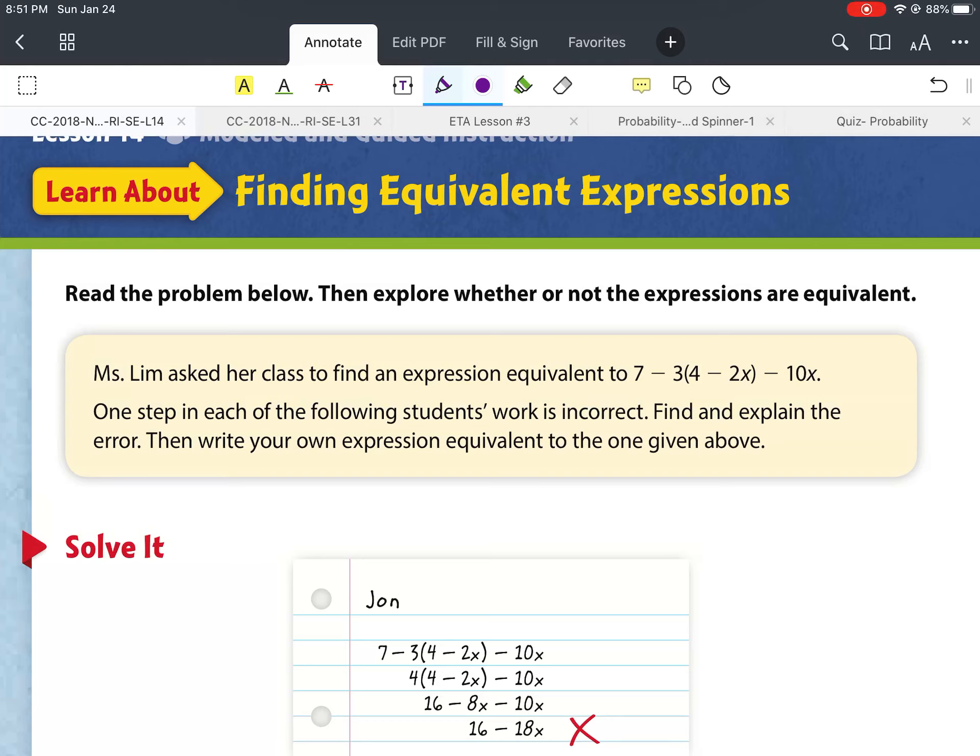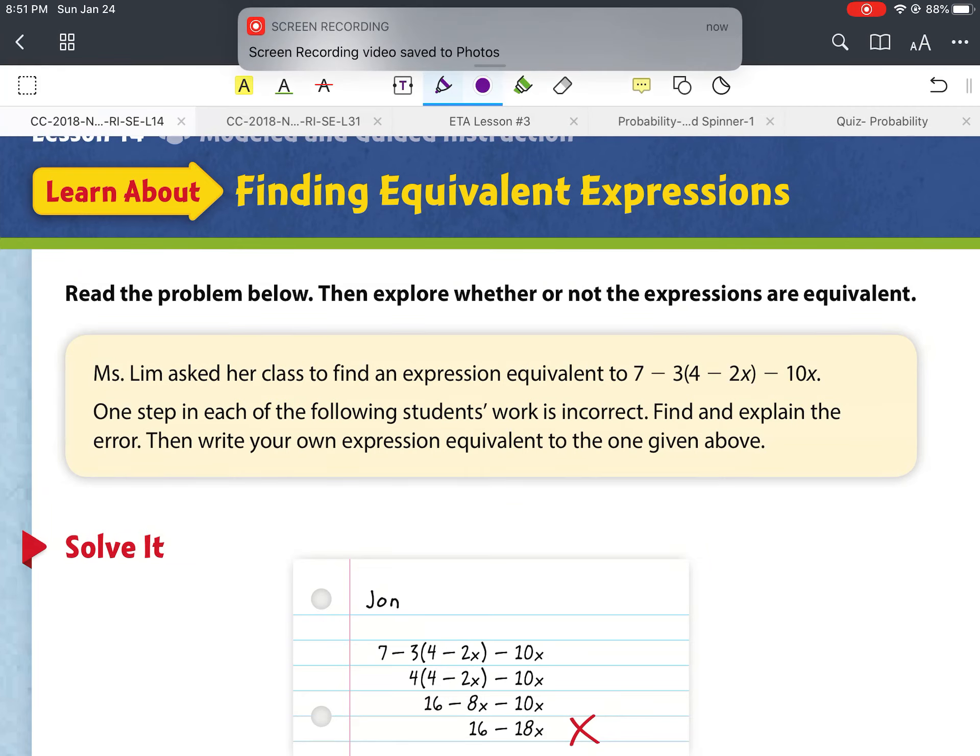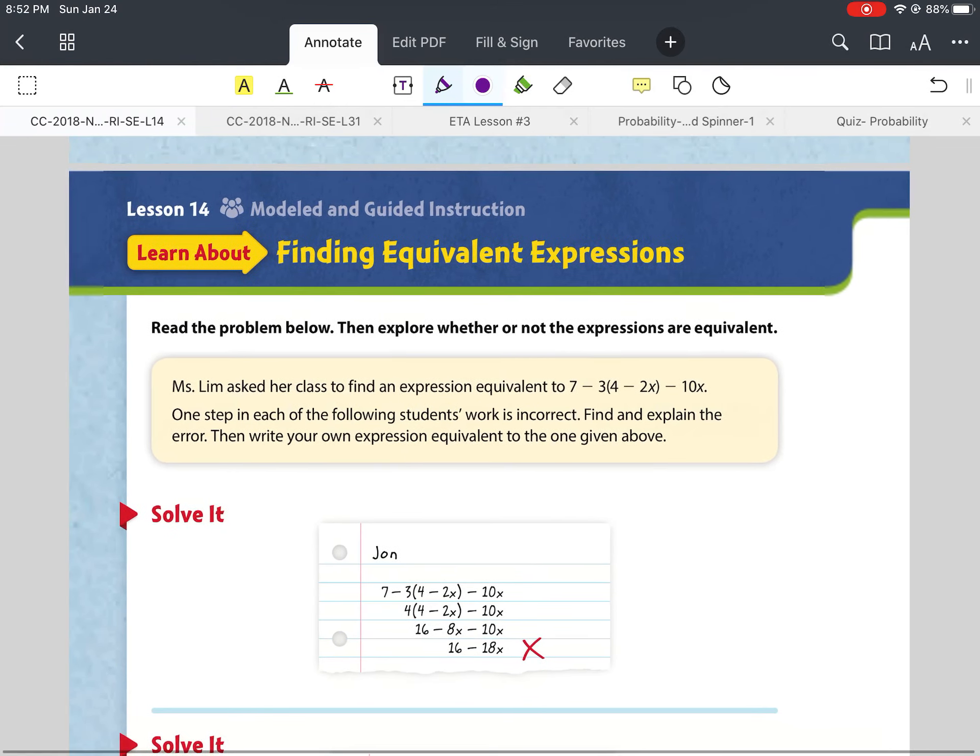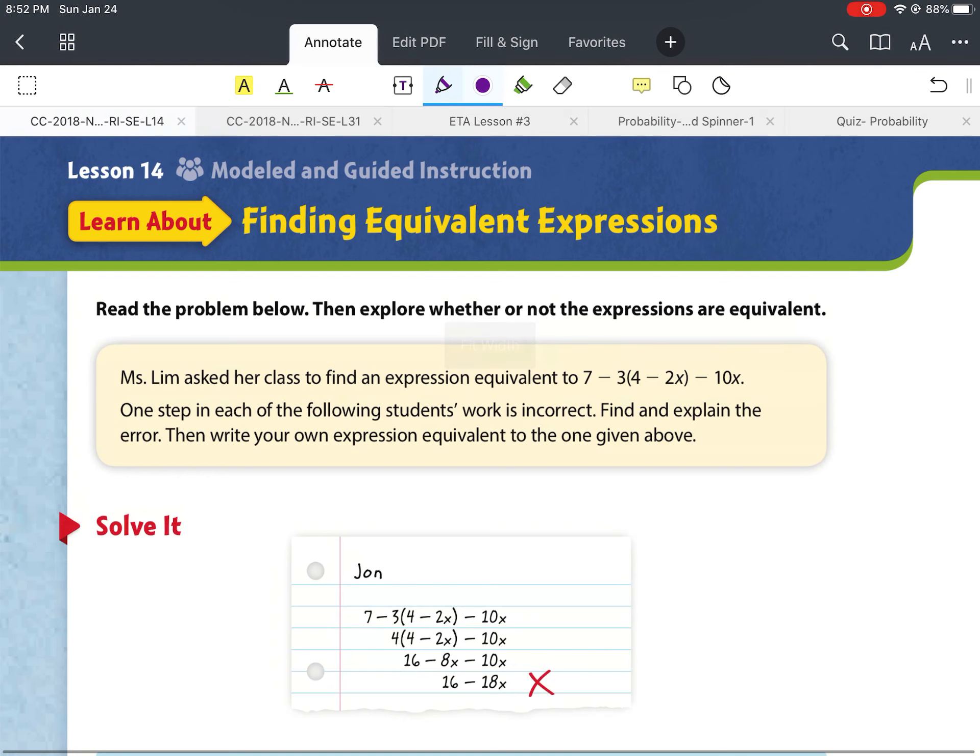Okay, we're going to begin part 3 of lesson 14, turning your book to page 130, and let's begin. Ms. Lim asked her class to find an expression equivalent to 7 minus 3 times 4 minus 2x minus 10x. One step in each of the following students' work is incorrect. Find and explain the error, then write your own expression equivalent to the one given above.